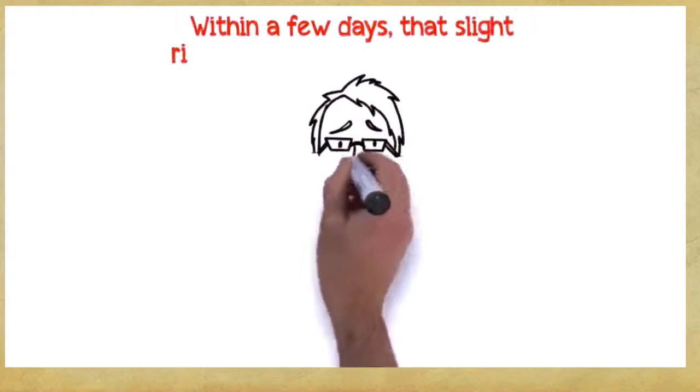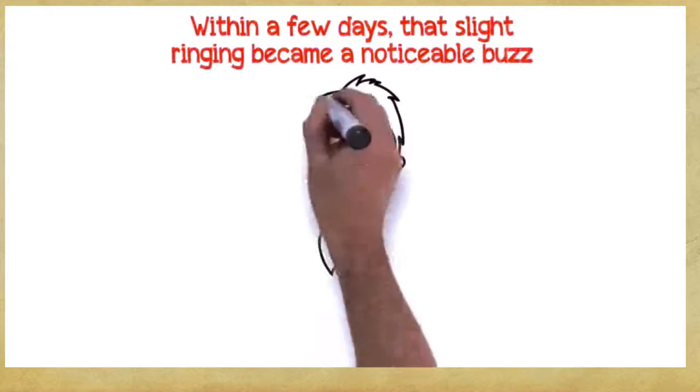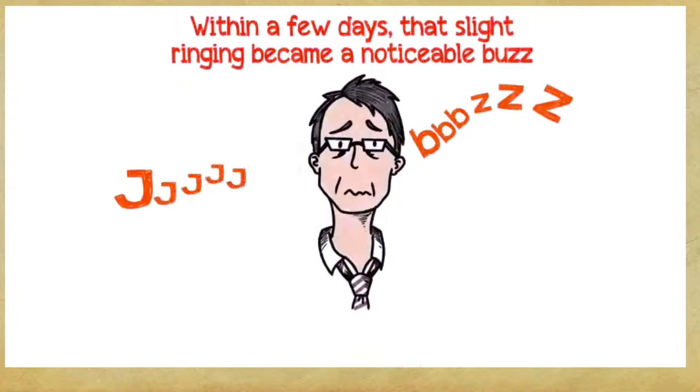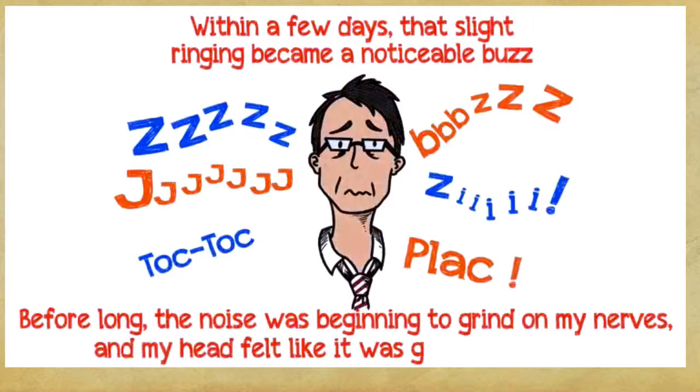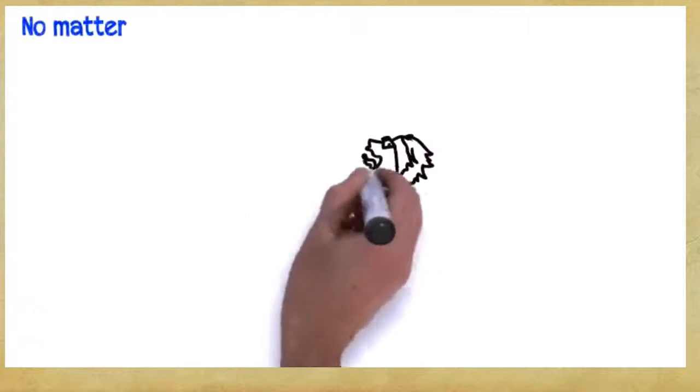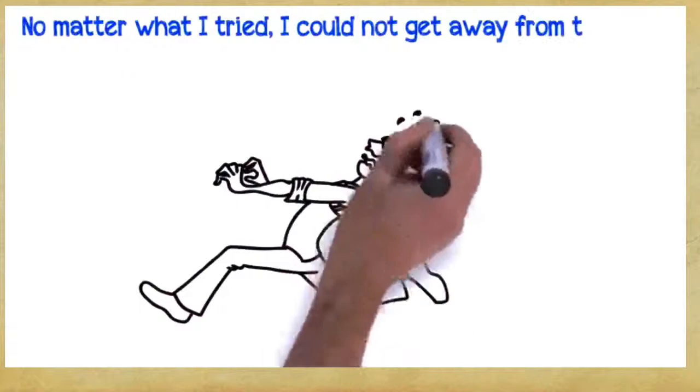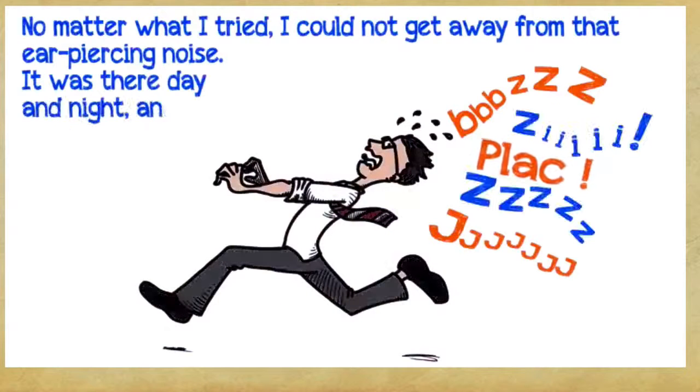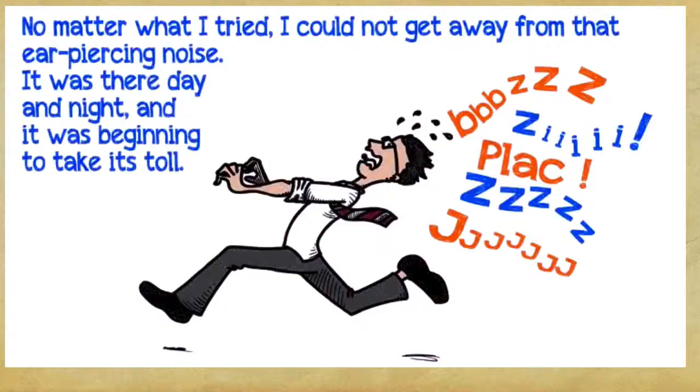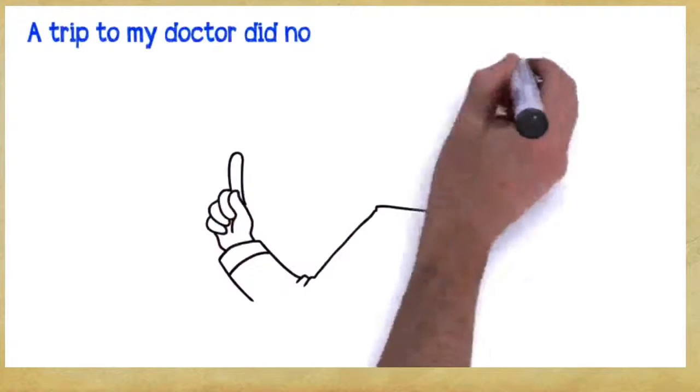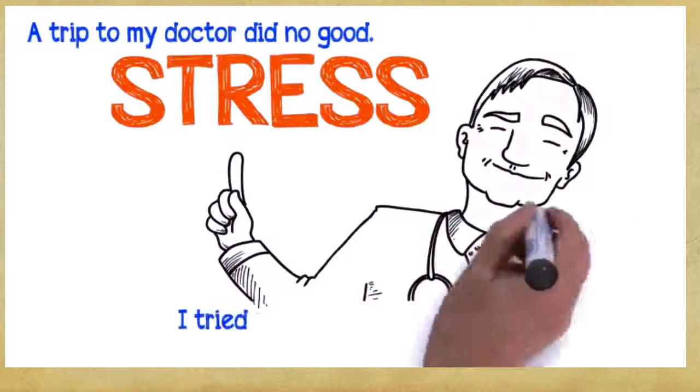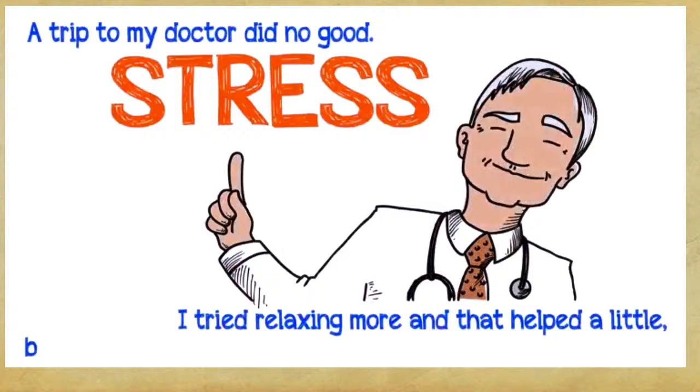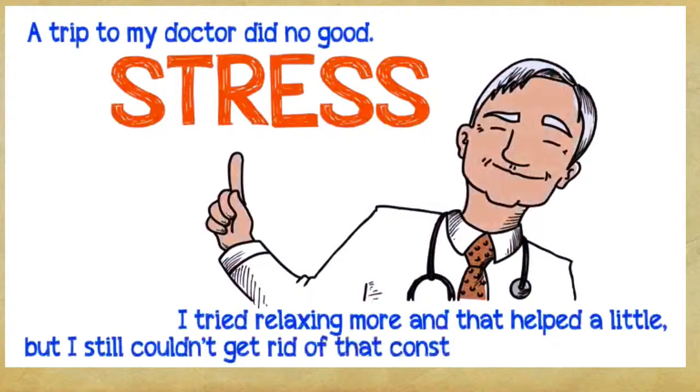Within a few days, that slight ringing became a noticeable buzz, followed periodically by loud bangs. Before long, the noise was beginning to grind up my nerves, and my head felt like it was going to explode. No matter what I tried, I could not get away from that ear-piercing noise. It was there day and night, and it was beginning to take its toll. A trip to my doctor did no good. He thought it was just a migraine induced by stress. I tried relaxing more, and that helped a little, but I still couldn't get rid of that constant buzz in my ears.